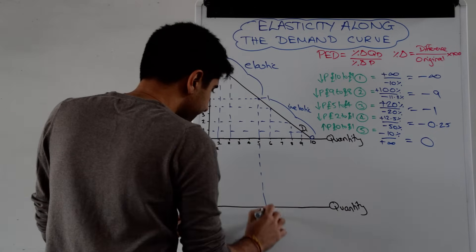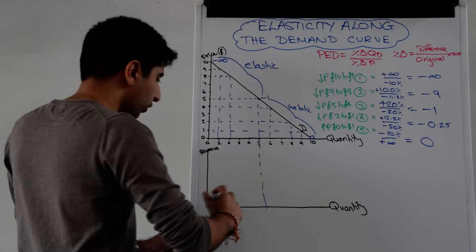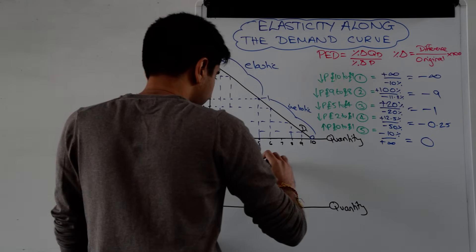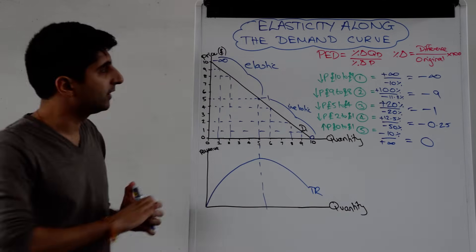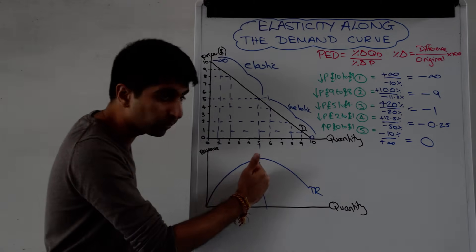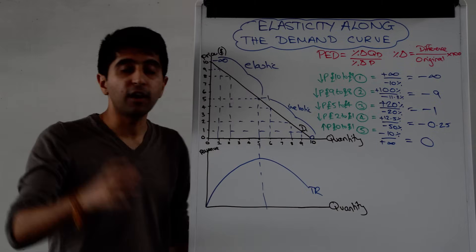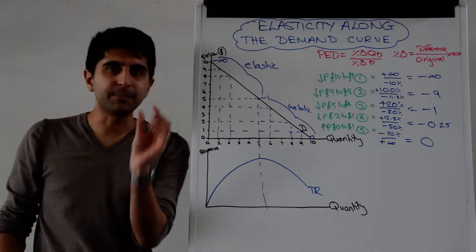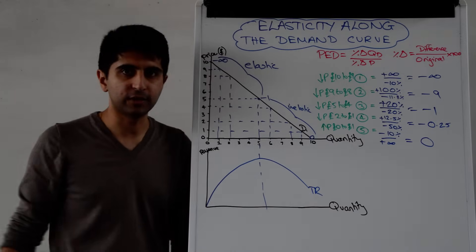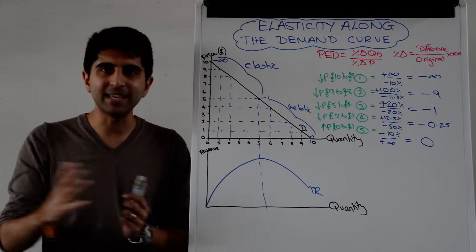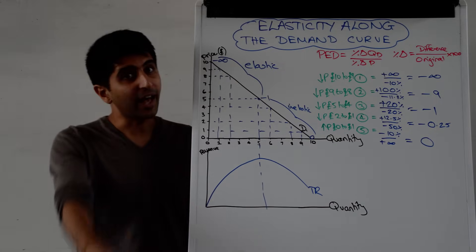What you would draw here is the midpoint of the line at unit elasticity of minus 1, then take that down and draw total revenue as a curve that is maximized at that quantity and then starts to fall. This makes the point: on the elastic portion, reducing prices increases total revenue; on the inelastic portion, continuing to reduce prices decreases total revenue — following the rules linking PED and total revenue. Hopefully that makes complete sense. You now understand why PED varies along the demand curve and can explain it eloquently. Thank you for watching — see you in the next video.